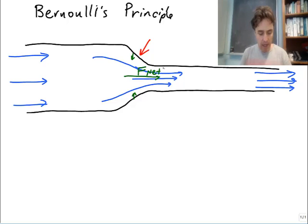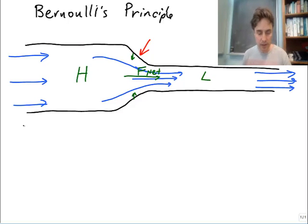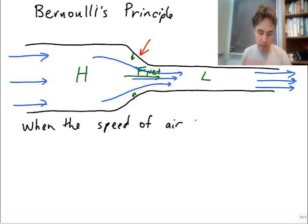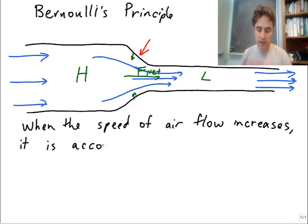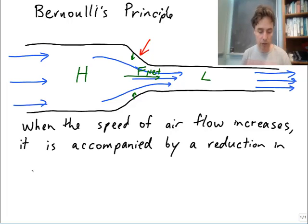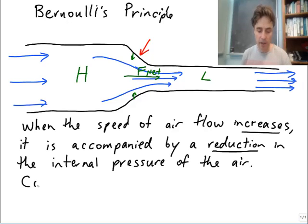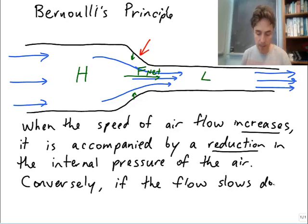We can label H for high pressure on the left and L for low pressure on the right. This is Bernoulli's Principle: when the speed of airflow increases, it is accompanied by a reduction in the internal pressure of the air. Conversely, if the flow slows down, pressure will increase.